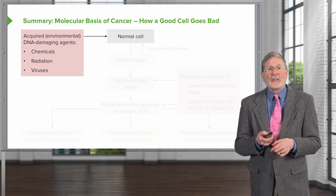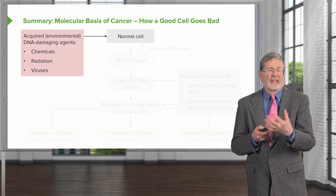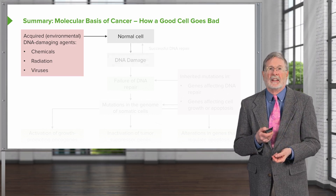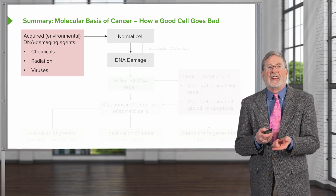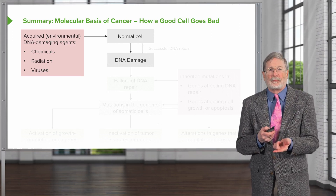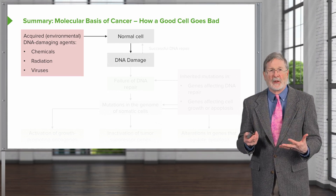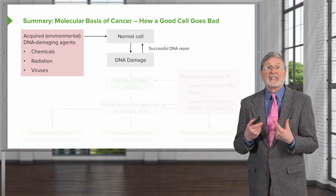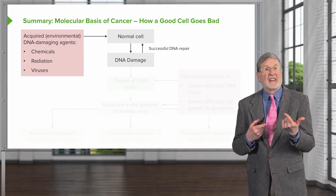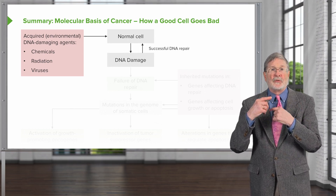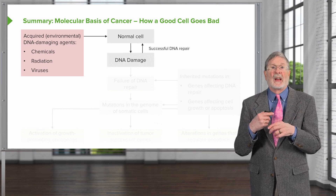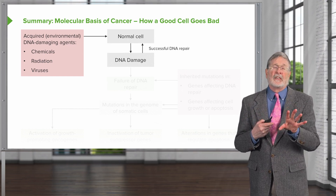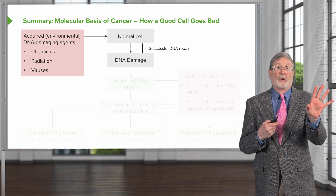And the normal cell gets injured. The normal nuclear material, the genome, is injured. There's DNA damage. But in the vast majority of us, in the vast majority of the time, we have mechanisms to recognize the damaged DNA and to fix it. So we have successful repair, and we're back to a normal cell, even though it was at one point injured.